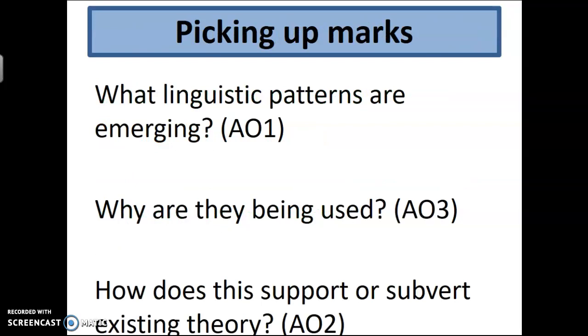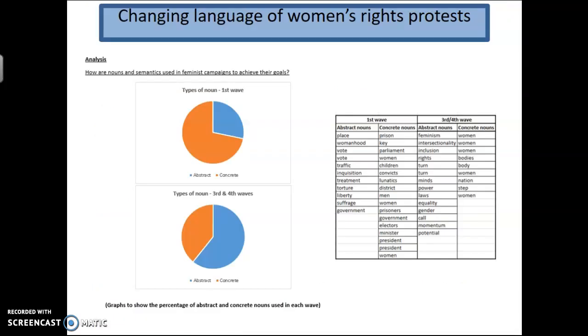Okay. So picking up the marks, then we're going back to our assessment objectives. What linguistic patterns are emerging? You're looking at language features, linguistic choices. Why are they being used? Think deeply about the context and the representations. Context. We're always thinking genre, audience, purpose, and representations are in there too. And how does this support or subvert existing theory? Right. Let's remind ourselves of the one we've just looked at. This one here. Pause it if you need to.